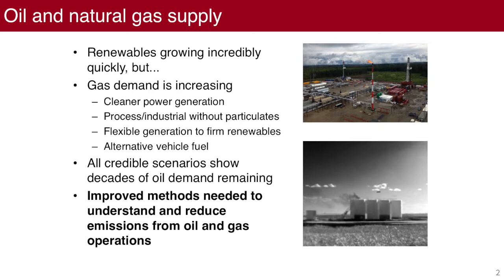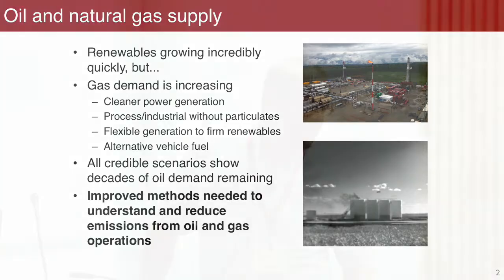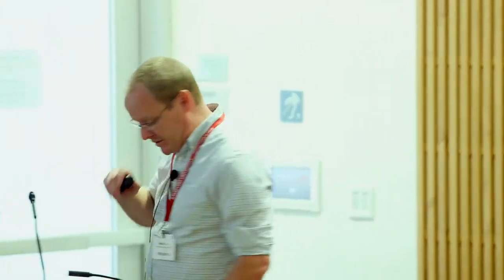Every day in California, including today, between about 4 and 7 o'clock, as Lynn said, we ramp. We're going to ramp today 12 to 14 gigawatts of natural gas power over the space of a few hours. That's more than the entire grid of almost every state in the country. We'll turn that on. And so flexible generation of firm renewables is going to be needed. A lot of interest in natural gas as an alternative vehicle fuel. So gas is with us. And in fact, gas demand is growing.